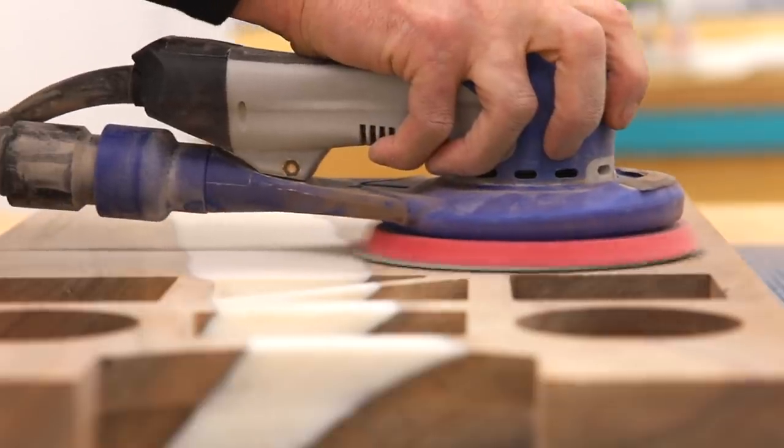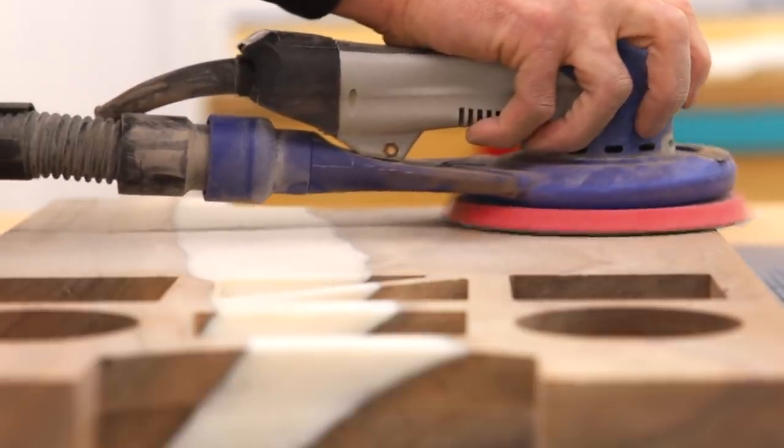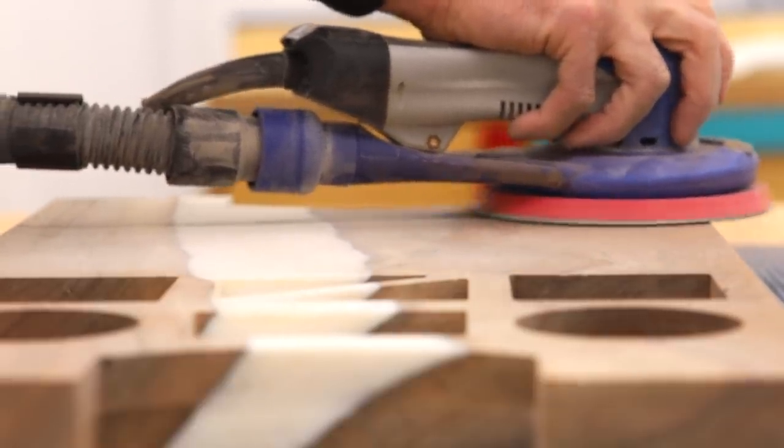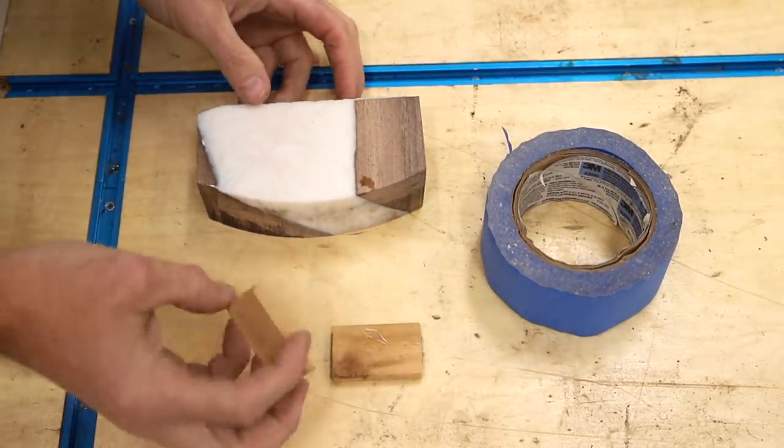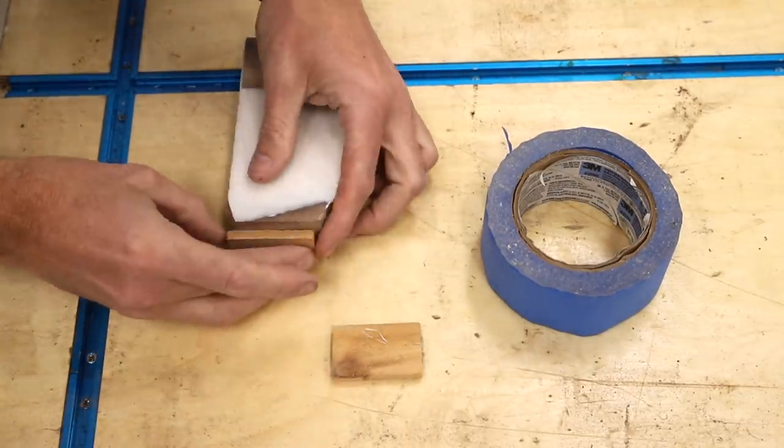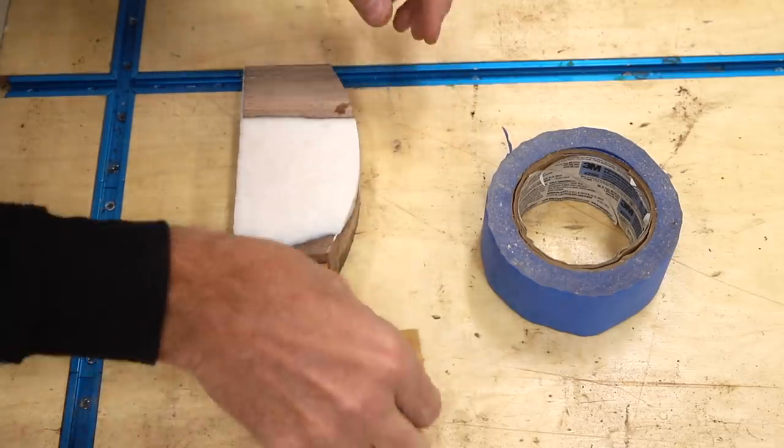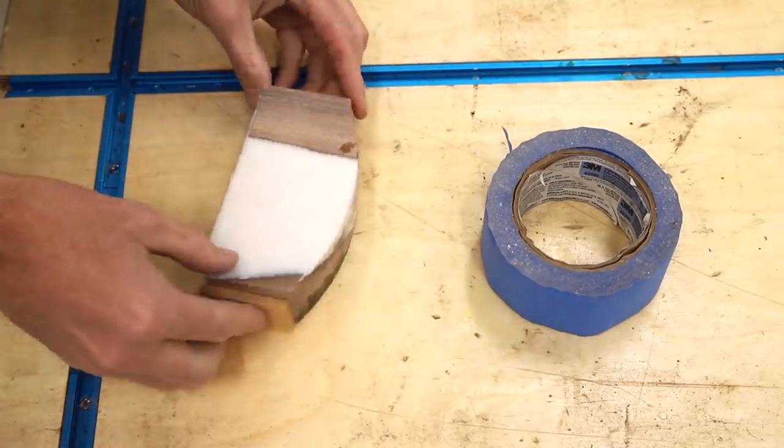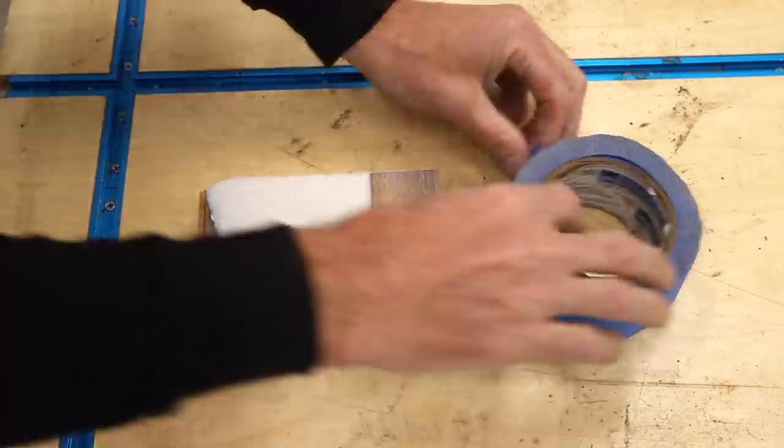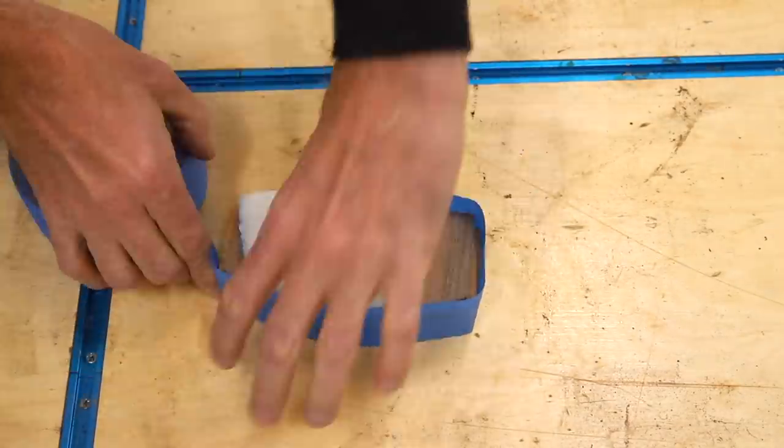I sanded down the excess epoxy and next moved to drilling the holes for the handles. To prevent any potential tear out while drilling I used the offcuts from the handle, a couple of spacers, and then wrapped blue tape around the edges so it would fit back into those cutouts.